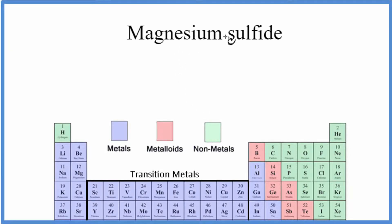To write the formula for magnesium sulfide, we go to the periodic table and we see Mg, that's a metal, and sulfide, that's the sulfur, that's the non-metal.